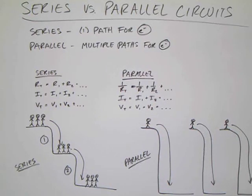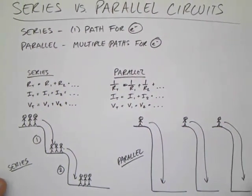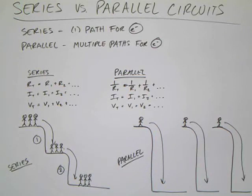So using the analogy of the waterfall, that's a good way to kind of picture the difference between how series circuits work, where there's one path, and how parallel circuits work, where there's multiple paths.